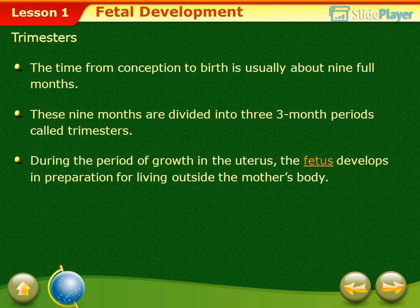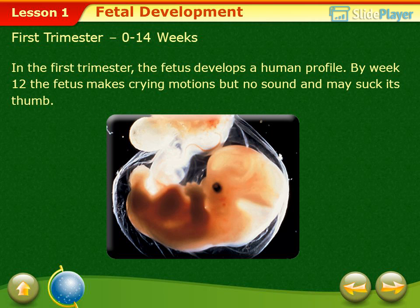Fetal development and trimesters: The time from conception to birth is usually about nine months. These nine months are divided into three three-month periods called trimesters. During the period of growth in the uterus, the fetus develops in preparation for living outside the mother's body.